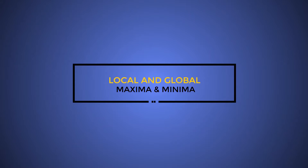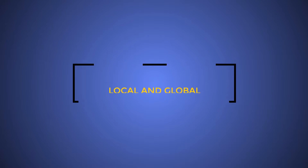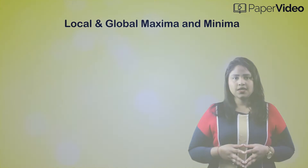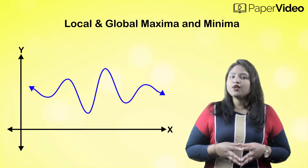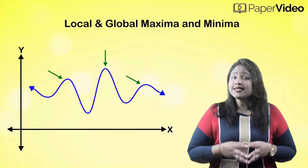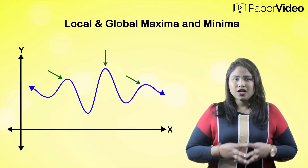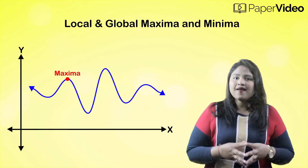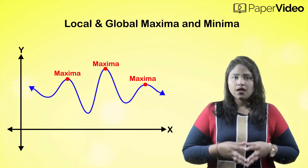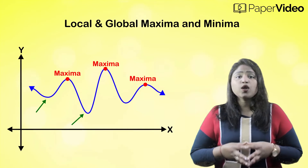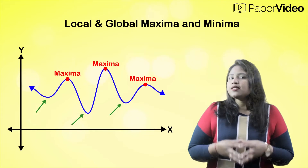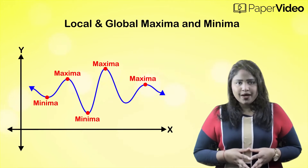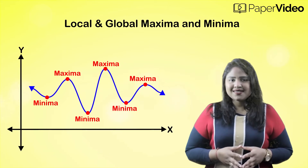Local and Global Maxima and Minima. Suppose we have a curve like this and we know that the highest point on the curve is a point of maxima. So this curve has three points of maxima. We also know that the lowest point on the curve is a point of minima. So this curve has three points of minima. We are already clear on this.